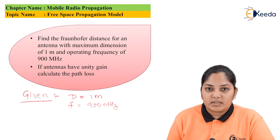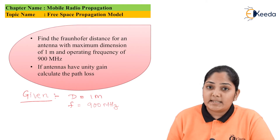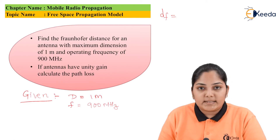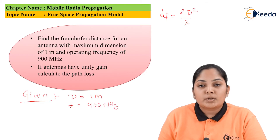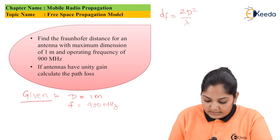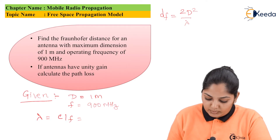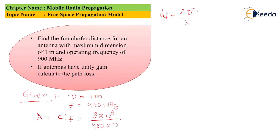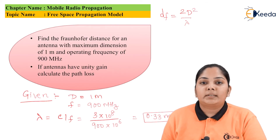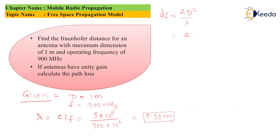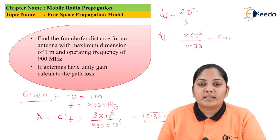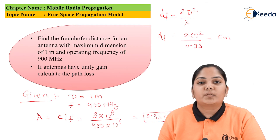We are asked to find the Fraunhofer distance. The formula is df = 2D² / λ. We have f = 900 MHz, so let us calculate λ: λ = c / f = 0.33 meters. Using this value of λ and D = 1 meter, the Fraunhofer distance df = 2 × 1² / 0.33 = 6 meters.